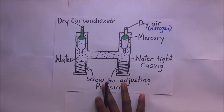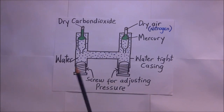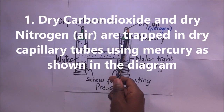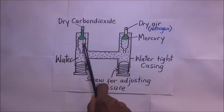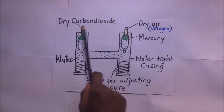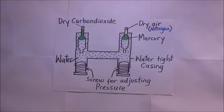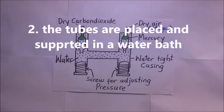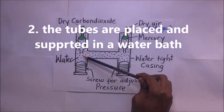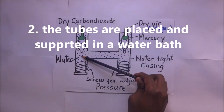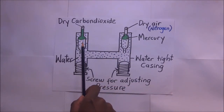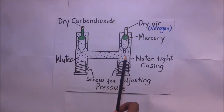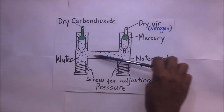Dry carbon dioxide and dry nitrogen are trapped in these capillary tubes with mercury. The tubes are immersed in a constant water bath to ensure that the temperature affecting these trapped gases remains constant. That is the function of this constant water bath.